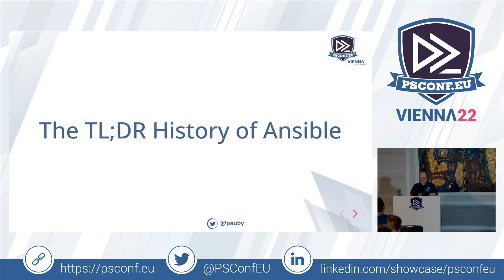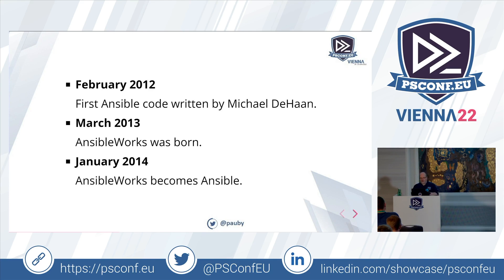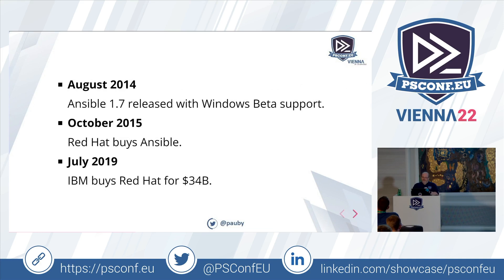The too-long-didn't-read history of Ansible: it was first written in February 2012 by Michael DeHaan. Michael worked at Red Hat and on projects called Cobbler and Funk. He took those experiences, along with his time at Puppet, and created Ansible. In 2013 he created a company called Ansible Works, then changed the name to just Ansible in January 2014.